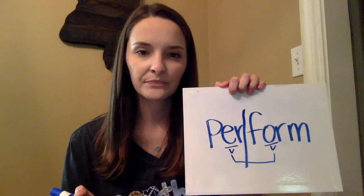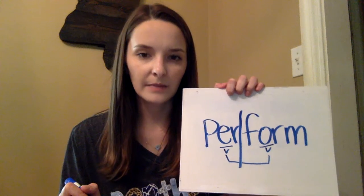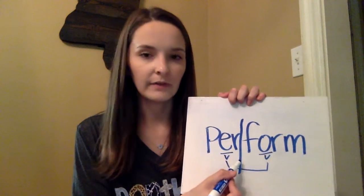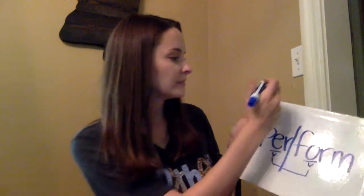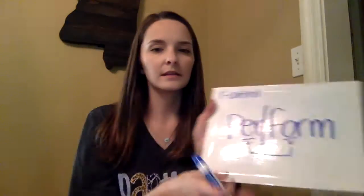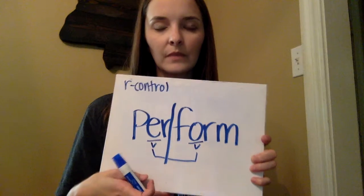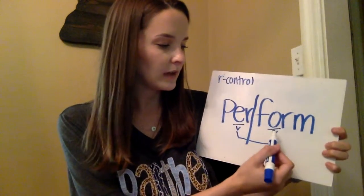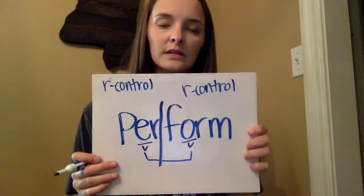Let's look at the first part of this word: 'per.' What syllable type is it when you have a vowel followed by an R? R-controlled. Now let's look at the second part: 'form.' Again, we have a vowel followed by an R, so it's going to be R-controlled again. So it's R-controlled for both syllables of this word.